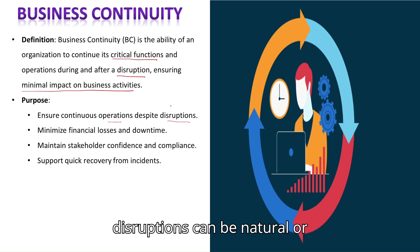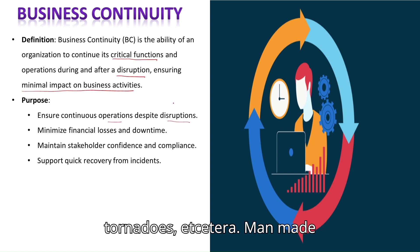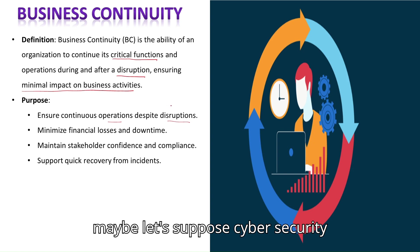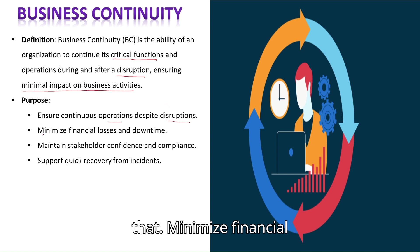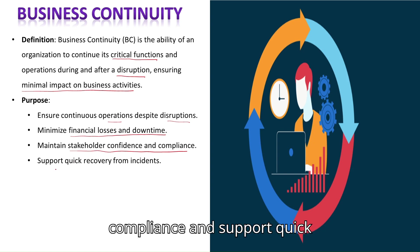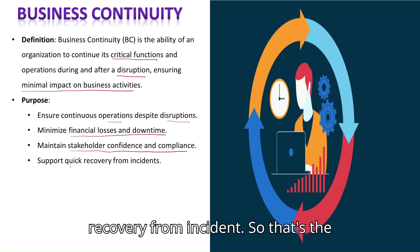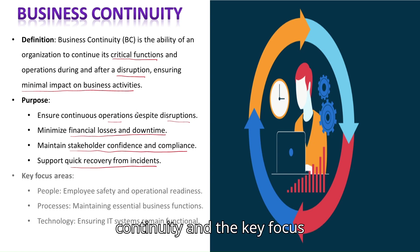Disruptions can be natural or man-made. Natural disruptions include earthquakes, tornadoes, etc. Man-made disruptions may include cyber security incidents, cyber breaches, and similar events. The purpose of Business Continuity is also to minimize financial losses and downtime, maintain stakeholder confidence and compliance, and support quick recovery from incidents.